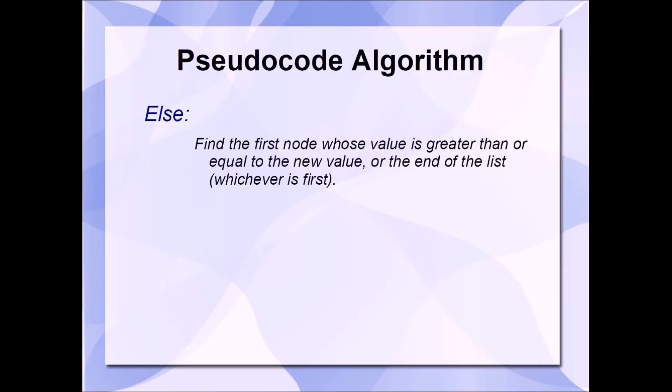If the list is not empty, then we're going to need to find the first node whose value is greater than or equal to the new value, or the end of the list, whichever is first. So, let's take a look at this list here as an example. It's got four nodes. This list is sorted in ascending order based off of the integers that each node is storing.